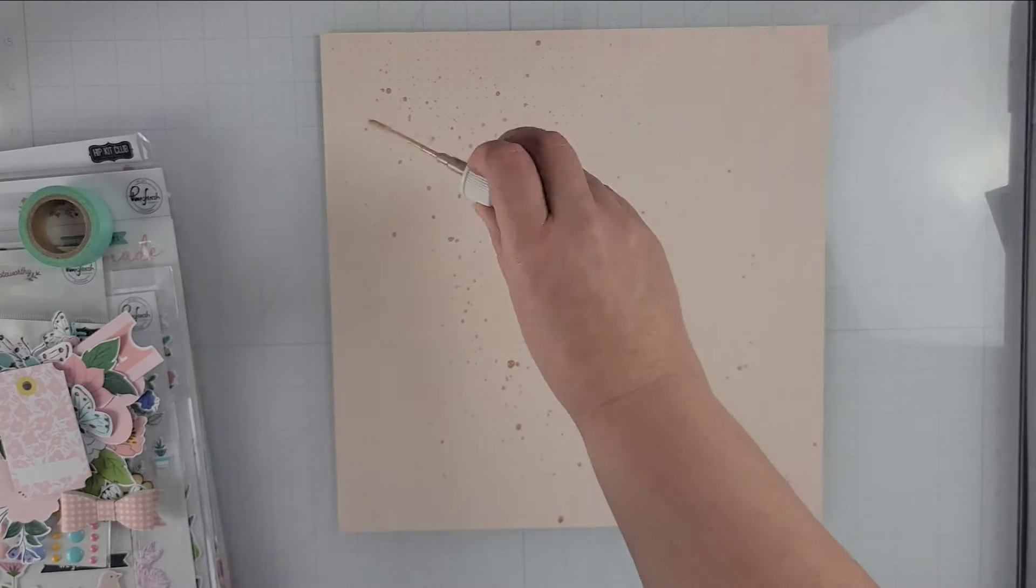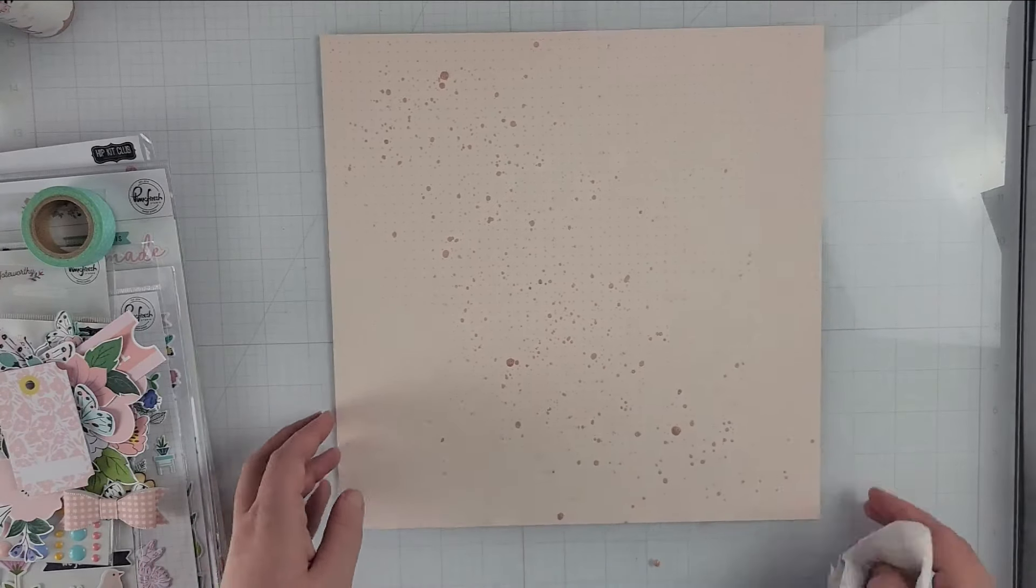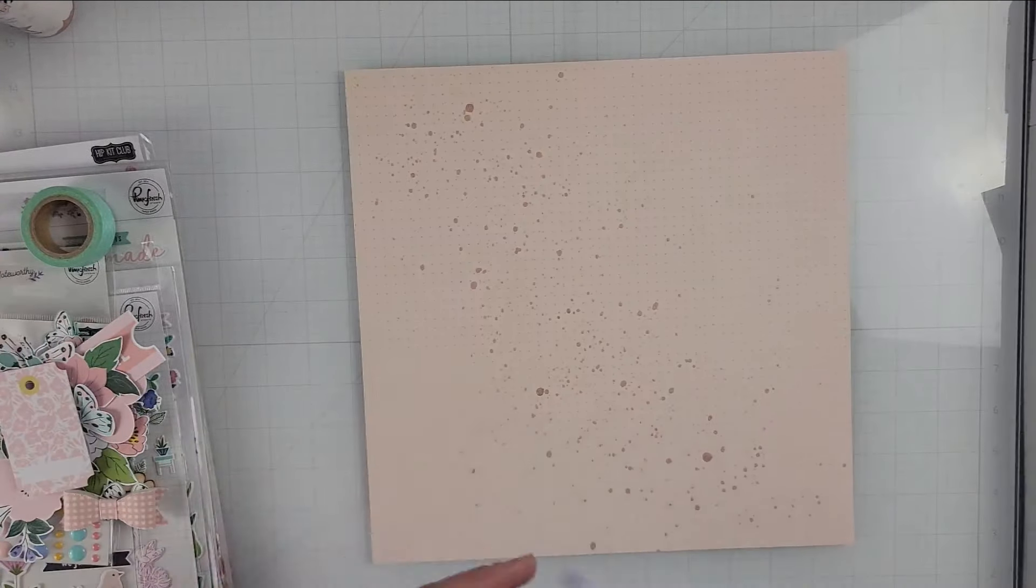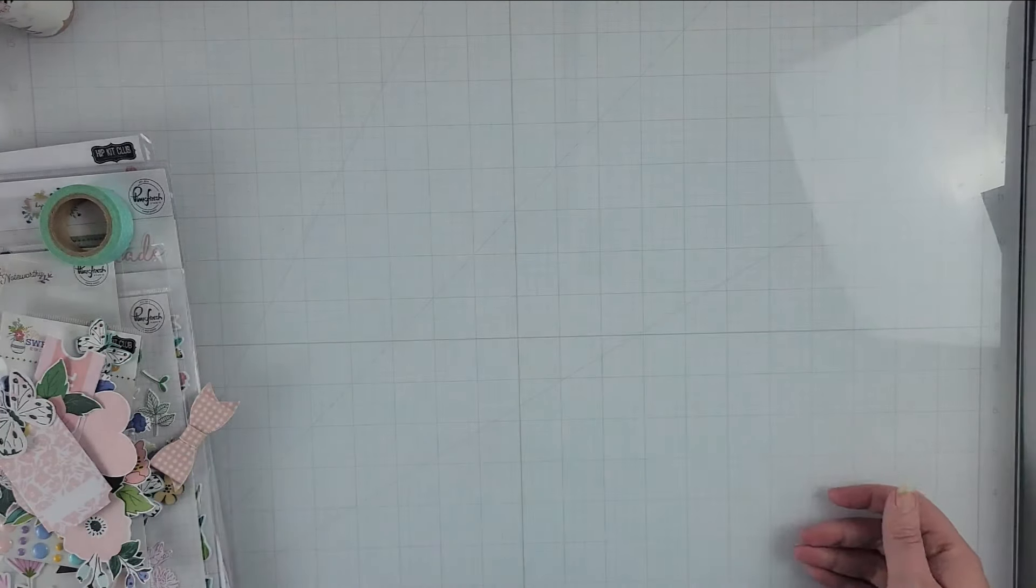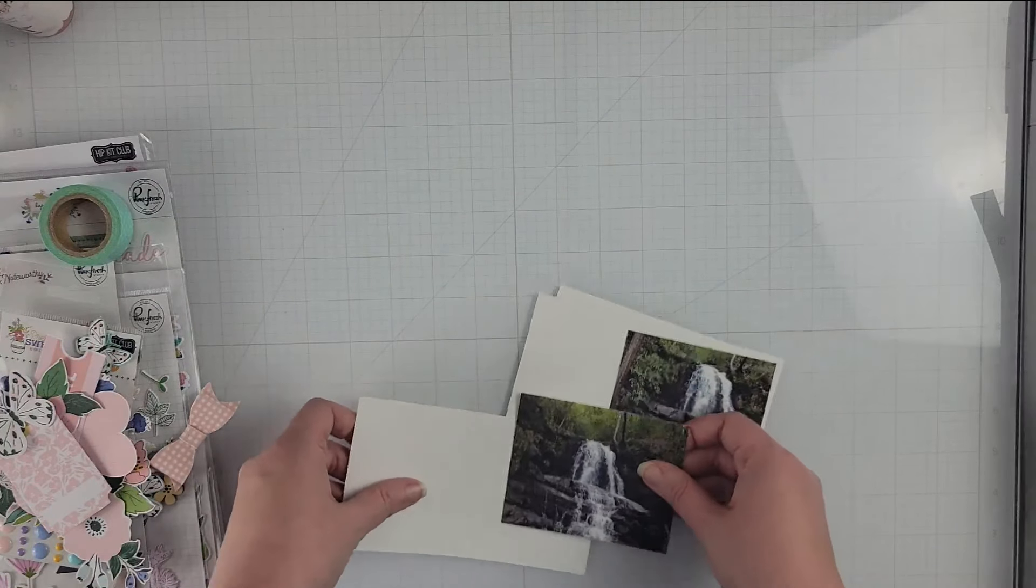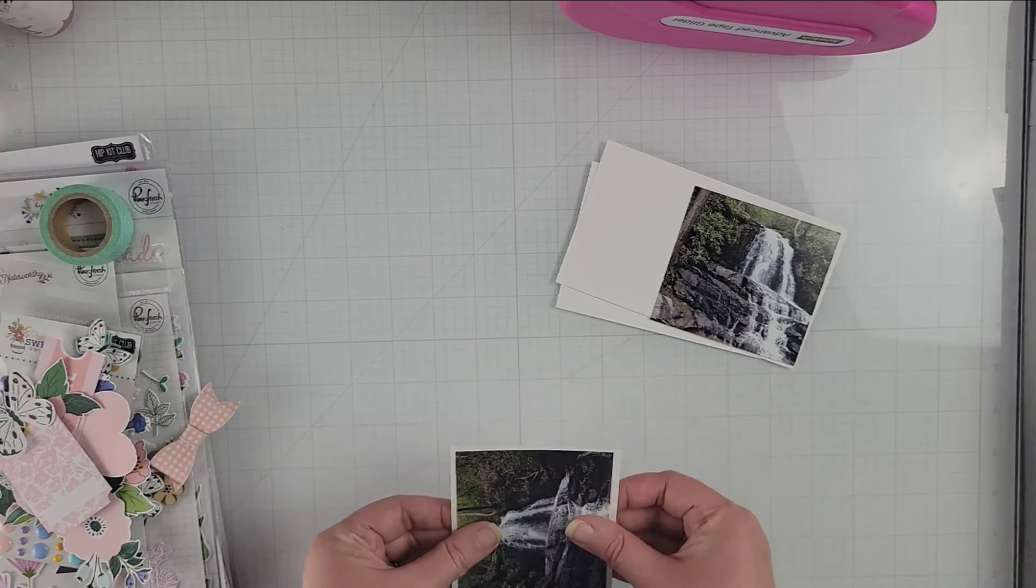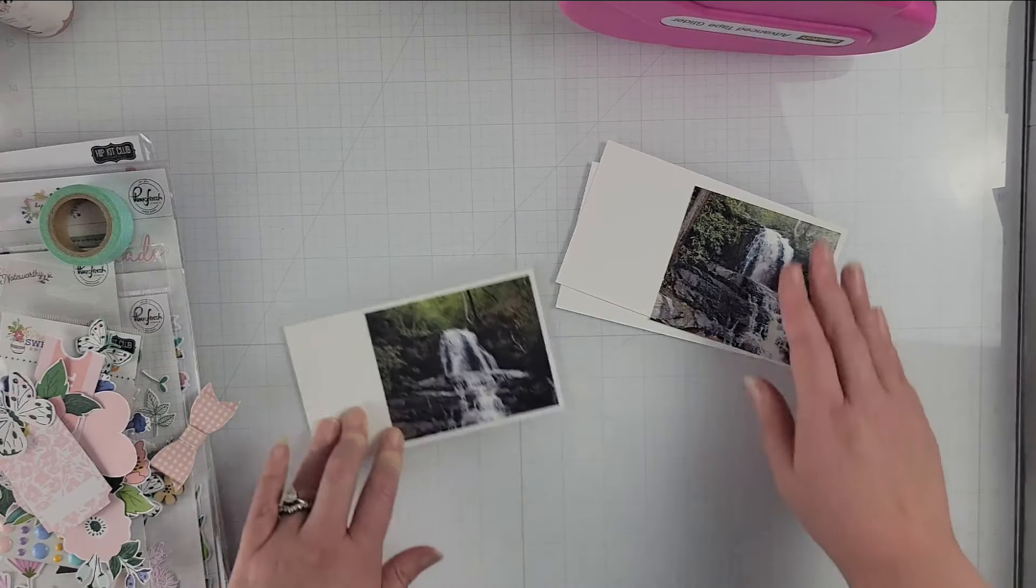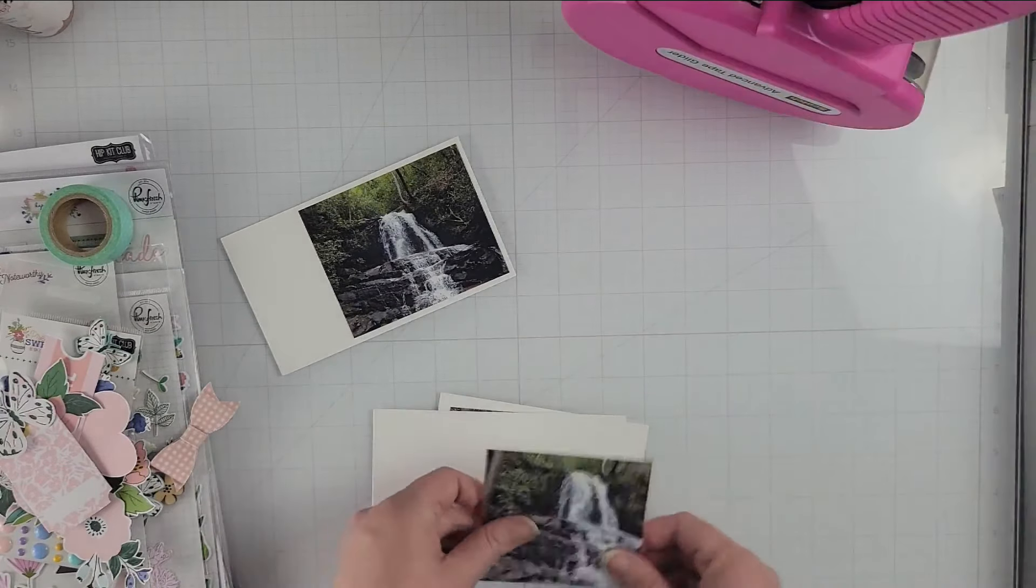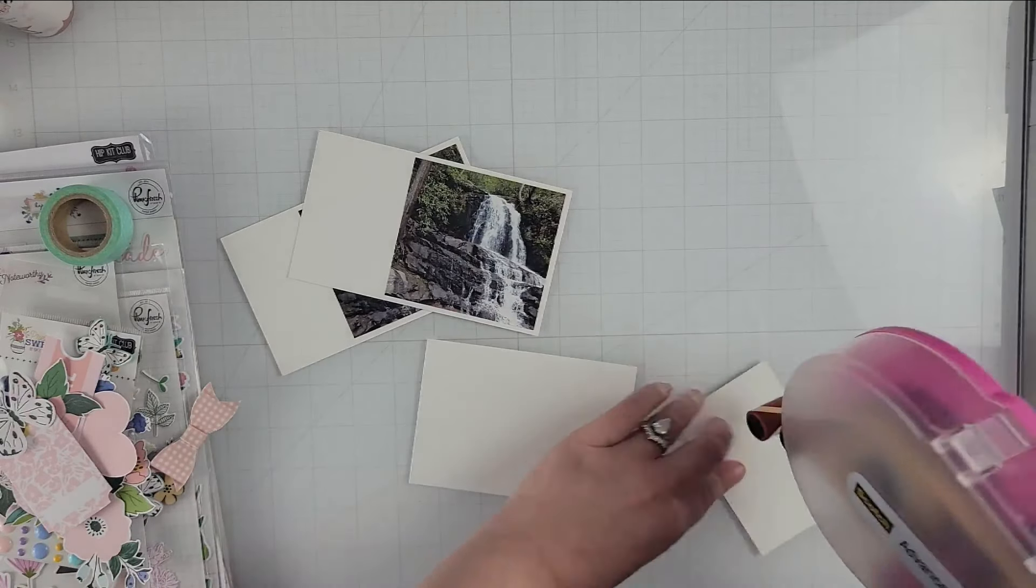Before I start to actually put my pattern papers down, I am taking some Heidi Swapp color shine in the color of Blush. This color, while it looks darker on the page right now, when it dries it actually almost dries the exact color of the background. I just added that little bit of splatter just to add a little bit of very subtle interest to the background. You don't really see it on camera, but you can see it in person.